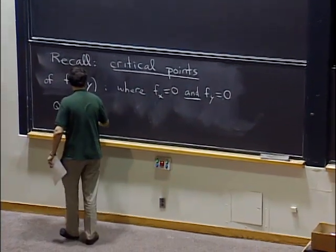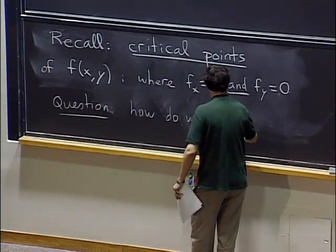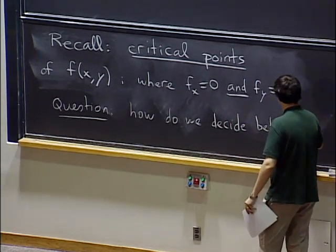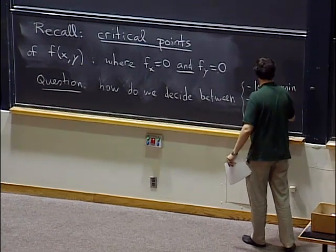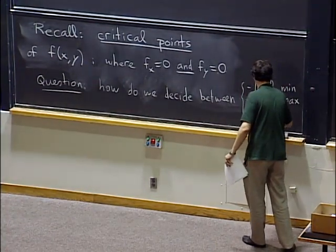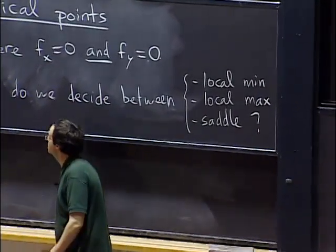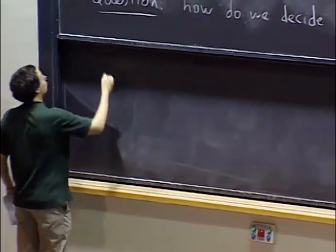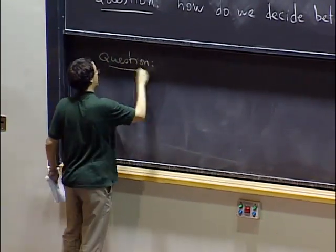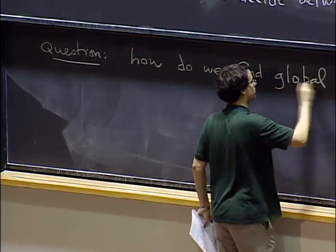So the question is: how do we decide between the various possibilities — local minimum, local maximum, or saddle point? And in fact, why do we care? The other question is how do we find the global minimum or maximum of a function?